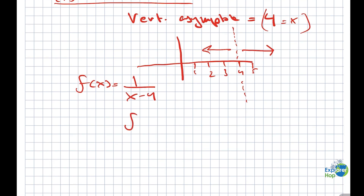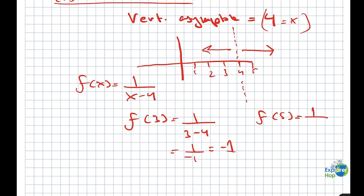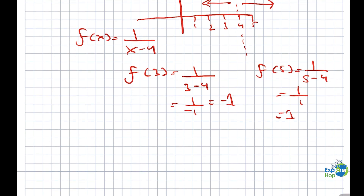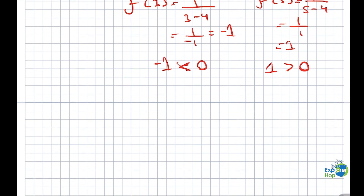First, let's plug in f of 3 and then f of 5 and see what we get. 1 over 3 minus 4 is equal to 1 over minus 1, which equals minus 1. For f of 5, we get 1 over 5 minus 4, which is equal to 1 over 1, which equals 1. So f of 3 is minus 1, which is less than 0, and f of 5 is 1, which is greater than 0.